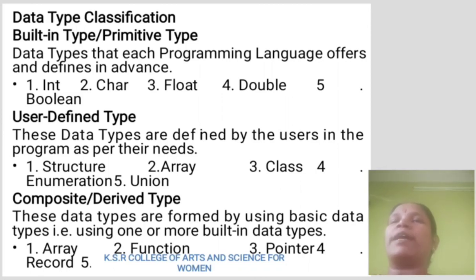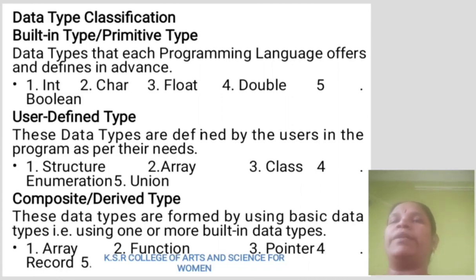Composite or derived data types: this data type is formed by using the basic data types, that is using one or more built-in data types. Examples include array, function, pointer, and records.